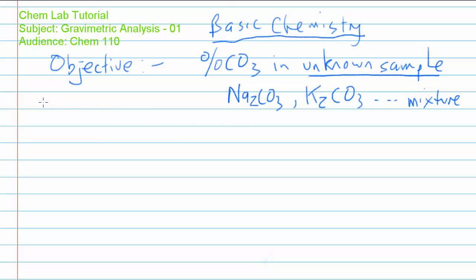For purposes of explanation here, let's just call the unknown carbonate M₂CO₃, where the M part of the molecule — well, we don't know what it is. It could be sodium, it could be potassium, it could be a mixture of those. We really don't know. All we know is that it's a soluble carbonate sample.